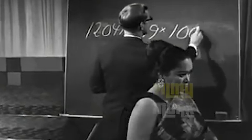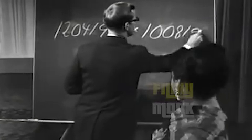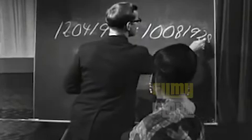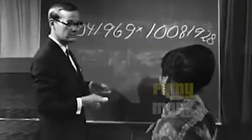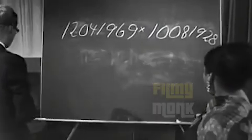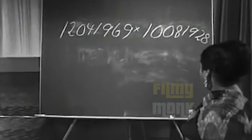1, 2, 0, 4, 1, 9, 6, 9 multiplied by 1, 0, 0, 8, 1, 9, 2, 8.